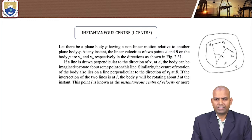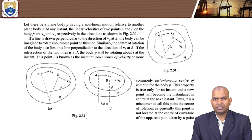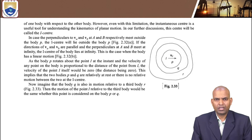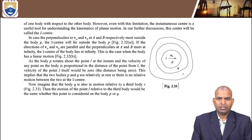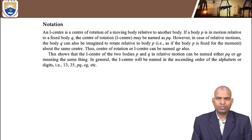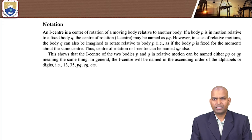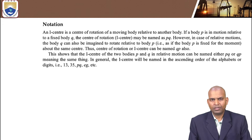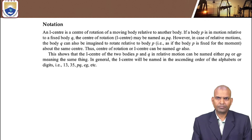Let us briefly describe what is an instantaneous center: it is the center about which a link rotates in relation to another link. That center is known as the iCenter, or instantaneous center.